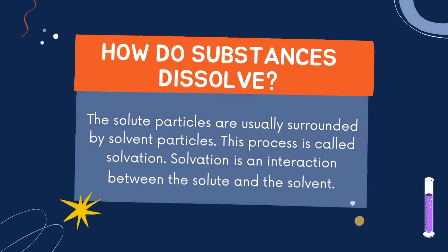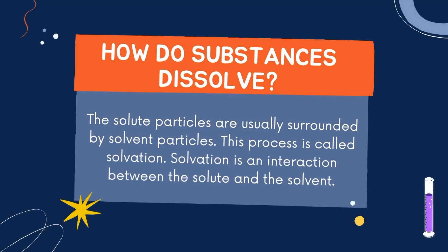How do substances dissolve? The solute particles are usually surrounded by solvent particles. This process is called solvation. Solvation is an interaction between the solute and the solvent.